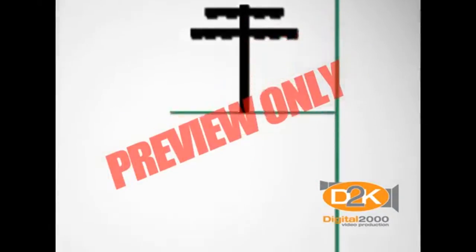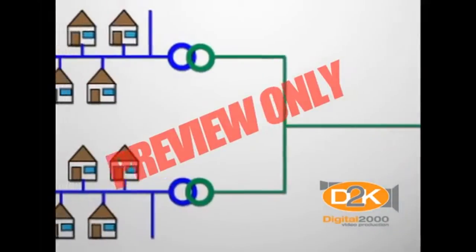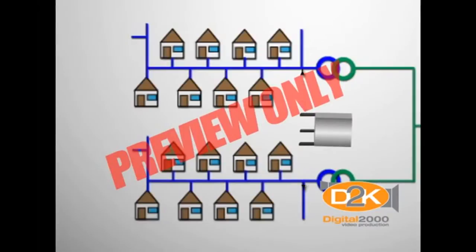Power lines leading to residential areas generally carry 4,200 to 34,500 volts. Within neighborhoods, the voltage is decreased further with step-down transformers located on top of poles or in a vault on the ground, to the typical 120 to 240 volts for safe home use.